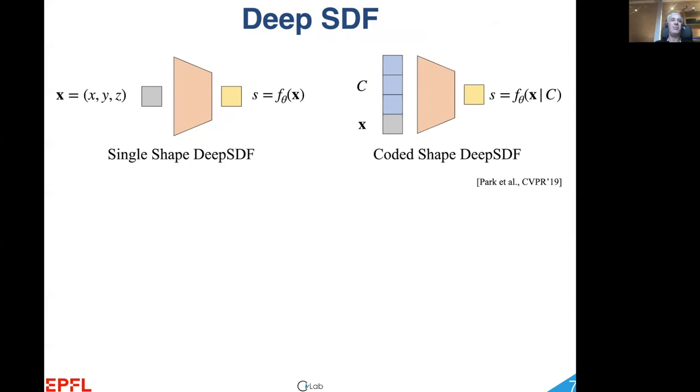a low-dimensional latent vector that can parameterize the surface, and this parameterization is differentiable.